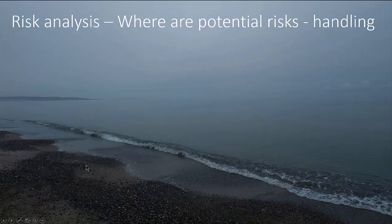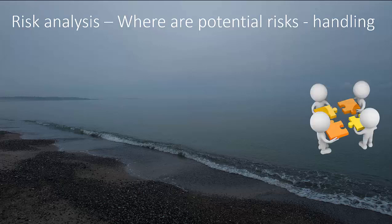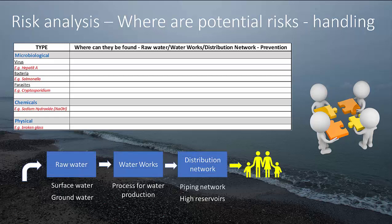So how do you go about doing a risk analysis — identifying potential risks and handling them? One basic and very important thing is that you do this work together: operation personnel and management, across all different parts of the water production. I made a simple table in Excel with two headings: type, and where can they be found — covering raw water, waterworks, and distribution network, plus prevention.